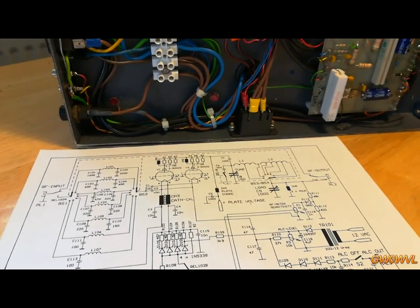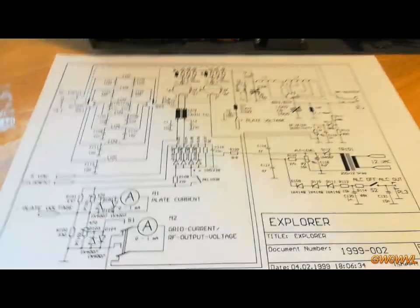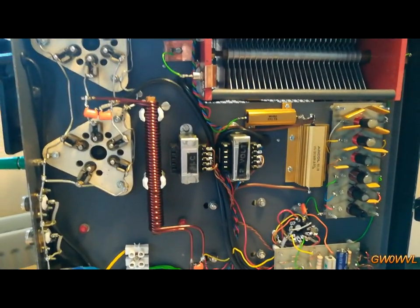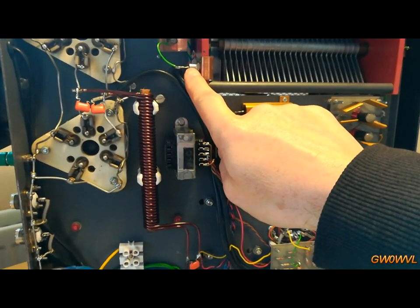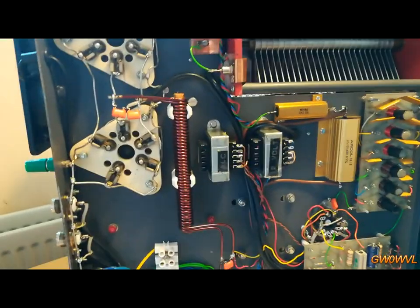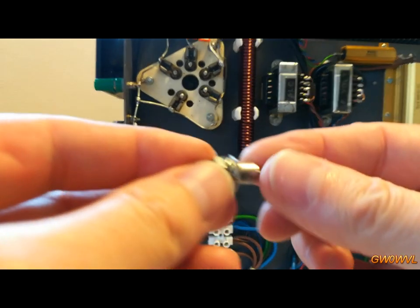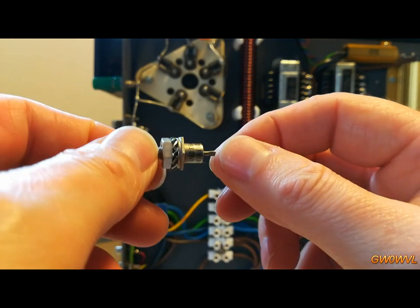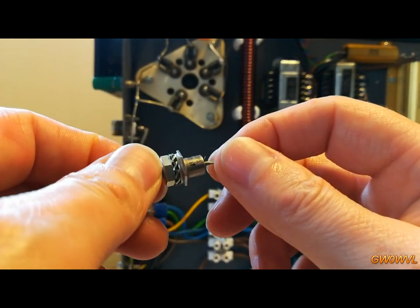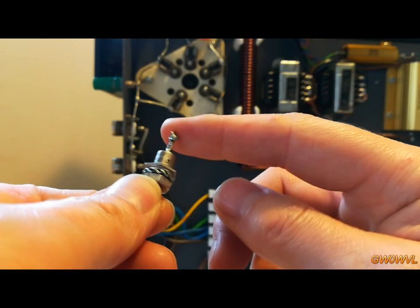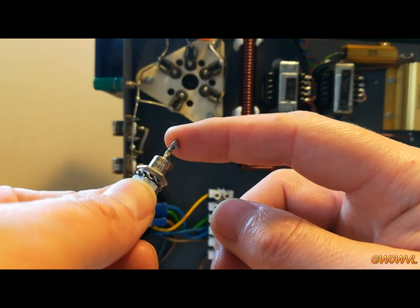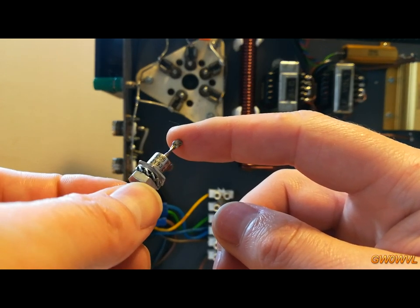Hello, so my issue with the Explorer amplifier I've got, I've traced it down to the Zener diode. The Zener diode had gone short circuit. This is the original Zener, it's made by Philips. The Philips 9.1 volt Zener diode.